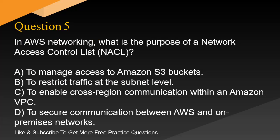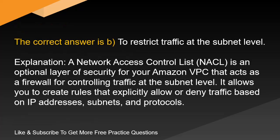Question 5. In AWS networking, what is the purpose of a Network Access Control List, NACL? A. To manage access to Amazon S3 buckets. B. To restrict traffic at the subnet level. C. To enable cross-region communication within an Amazon VPC. D. To secure communication between AWS and on-premises networks. The correct answer is B: To restrict traffic at the subnet level.